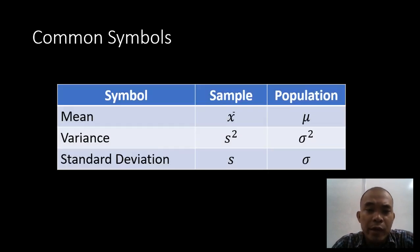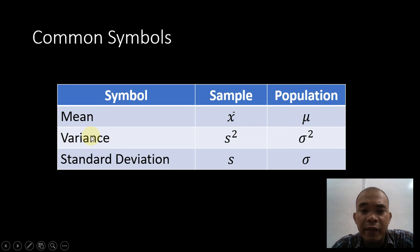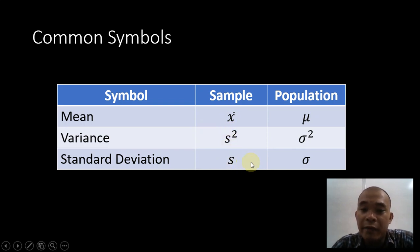We will review the basic common symbols that we will encounter during the course. We have the symbols for the mean, the variance, and the standard deviation. For the sample, we have x-bar. For the variance, we have s-squared, and then s for the standard deviation.